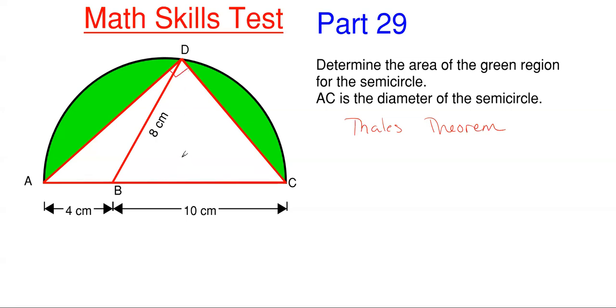All we have to do is find A to D and D to C, and those will be the base and height for the overall white triangle. Let's start working on getting those values.